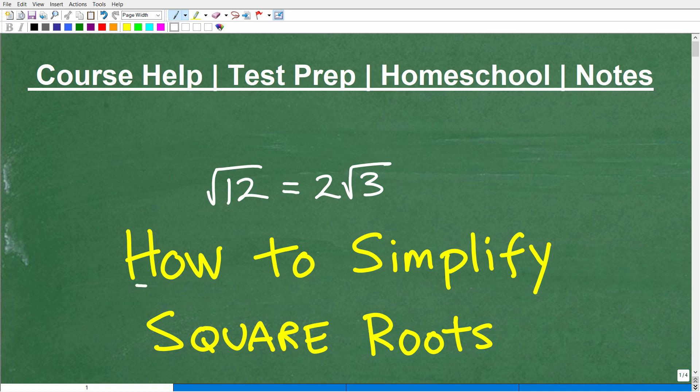Okay, let's talk about how to simplify square roots. You can see here I have an example of what I'm going to be talking about. I have the square root of 12, but a more simpler way we can write this is actually 2 times the square root of 3.